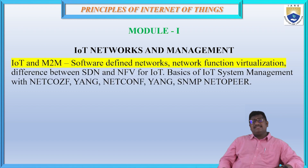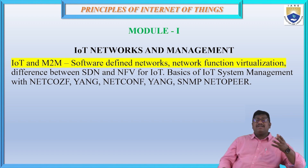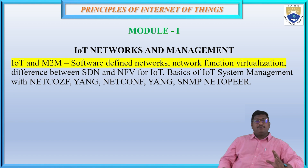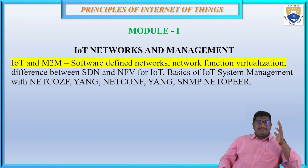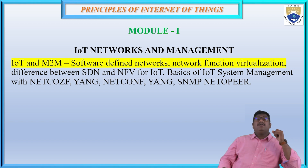In this IoT network and management system we have a few topics. The first major topic is IoT and M2M — what IoT (Internet of Things) was and what M2M (machine to machine) was. Merging IoT and M2M together we are doing IoT network and management. There are also software defined networks, which tell us how to define a particular network with the help of software, and network function virtualization.